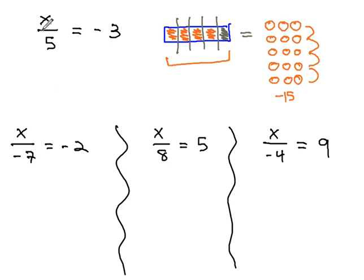We can represent this algebraically when x is divided by 5 by multiplying by 5. In other words, repeating that fifth 5 times.